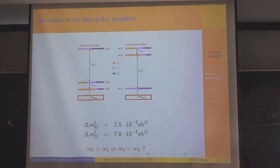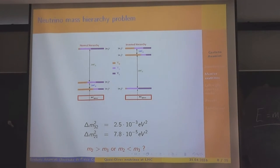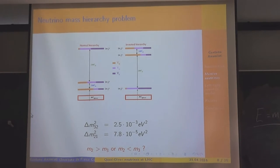Another problem in neutrino physics is the mass hierarchy problem. From atmospheric experiments we know the mass-difference squared between M3 and M2, and from solar experiments the mass difference between M2 and M1. But we don't know the absolute values of M1, M2, M3. So we don't know, for example, whether M3 is lighter or heavier than M1 and M2. In the first case we call it inverted hierarchy; in the second case, normal hierarchy.